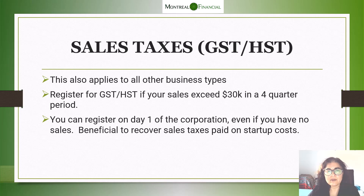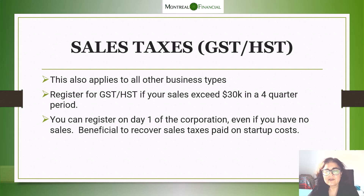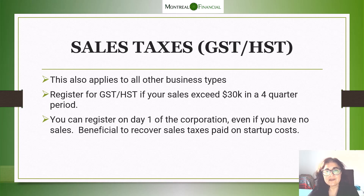The next tax obligation relates to sales taxes — GST, HST, and QST in Quebec. This is a tax obligation that applies both to sole proprietorships and corporations. Keep in mind, if you are transitioning from a sole proprietorship to a corporation, you have to get new GST/HST numbers, just like you'll get new business numbers for your separate corporate legal entity. You are required to register once you make $30,000 in sales or revenues over a four-quarter period — you need to recalculate your sales every four quarters, not on a yearly basis, to determine if you have exceeded $30,000.